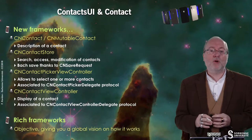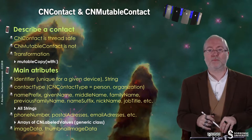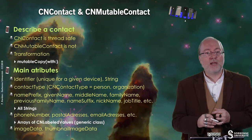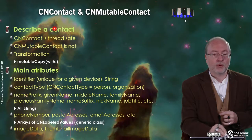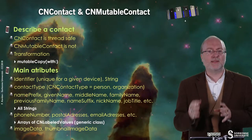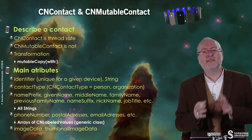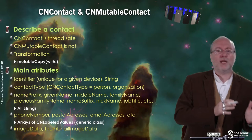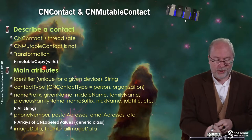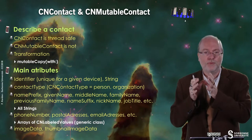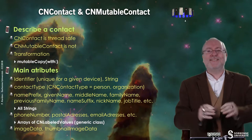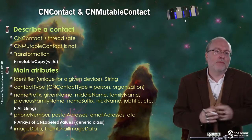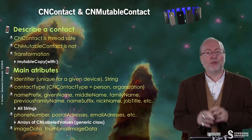It's a quite rich framework. The objective of this video is to give you a global vision on how it works; for the rest, you should go to the documentation. CNContact is thread safe — it's easier because it's read-only mode — while CNMutableContact is not, so you have to be careful with that. You can make a transformation from CNContact to CNMutableContact thanks to the method called mutableCopy, which creates an exact copy of the CNContact that you can then modify.